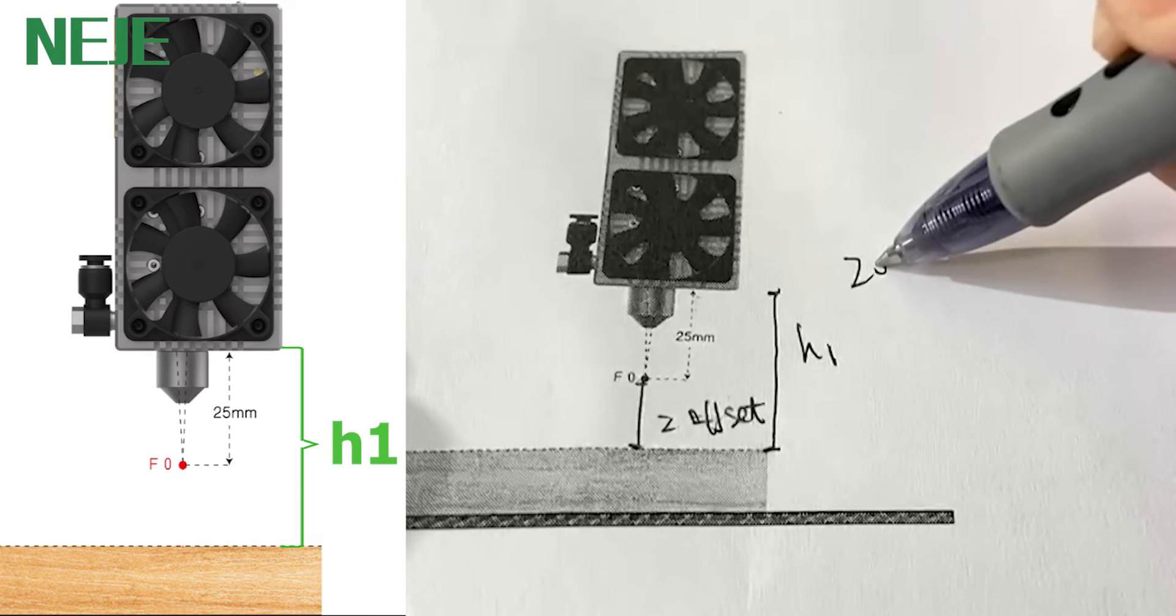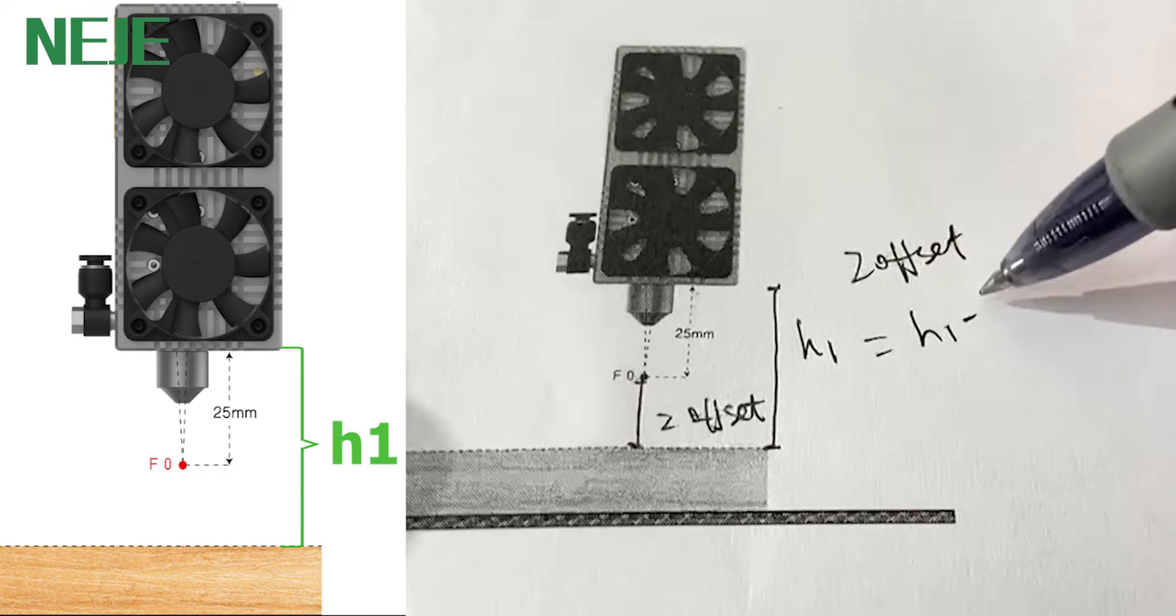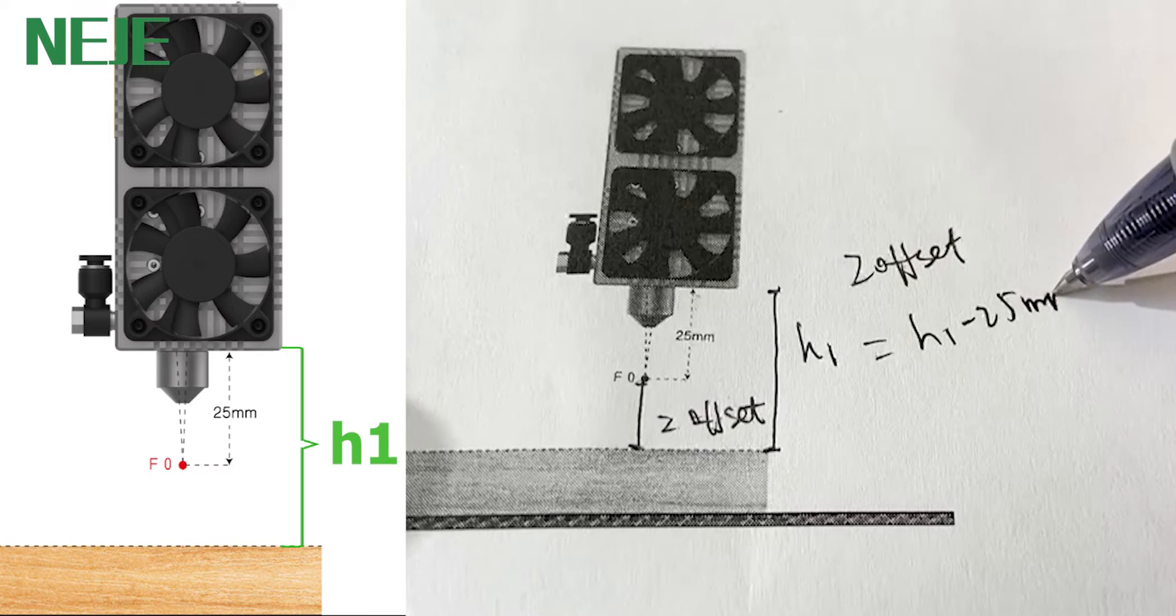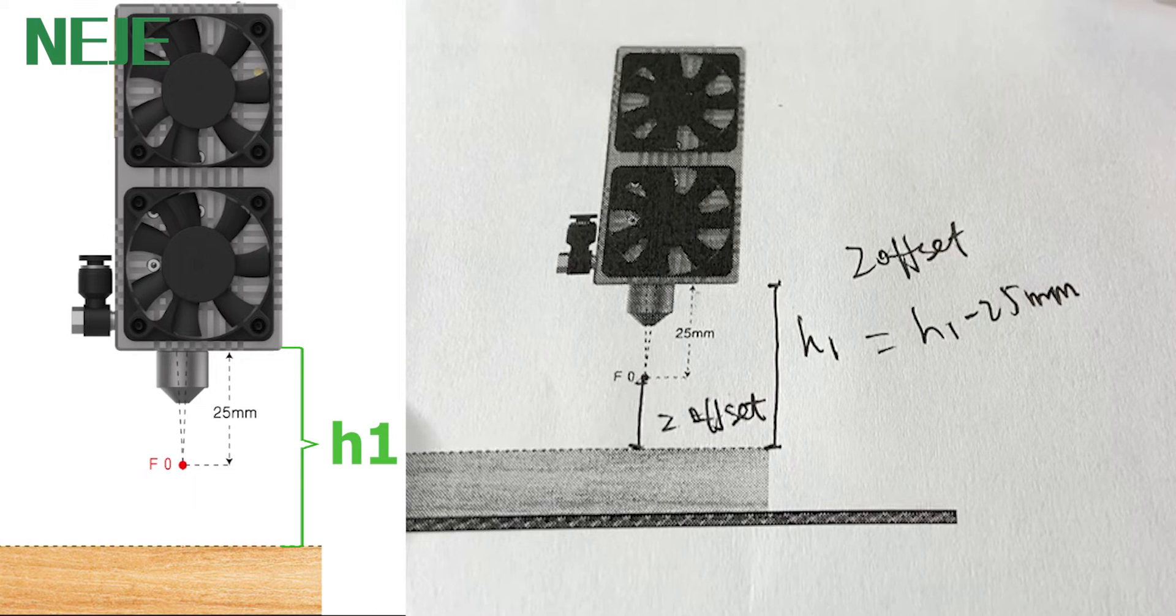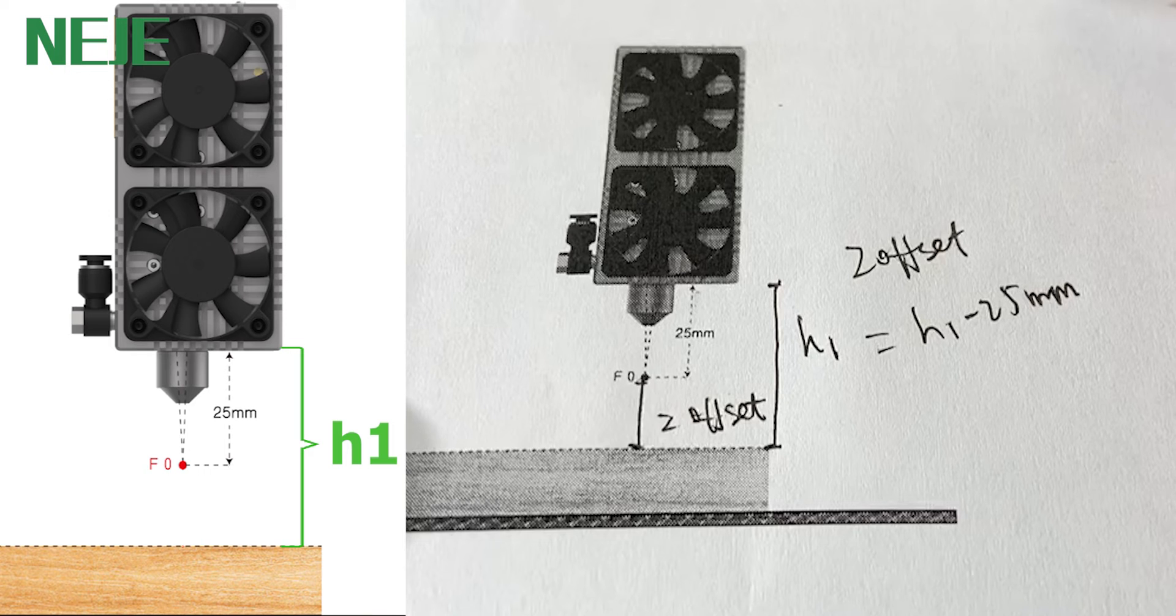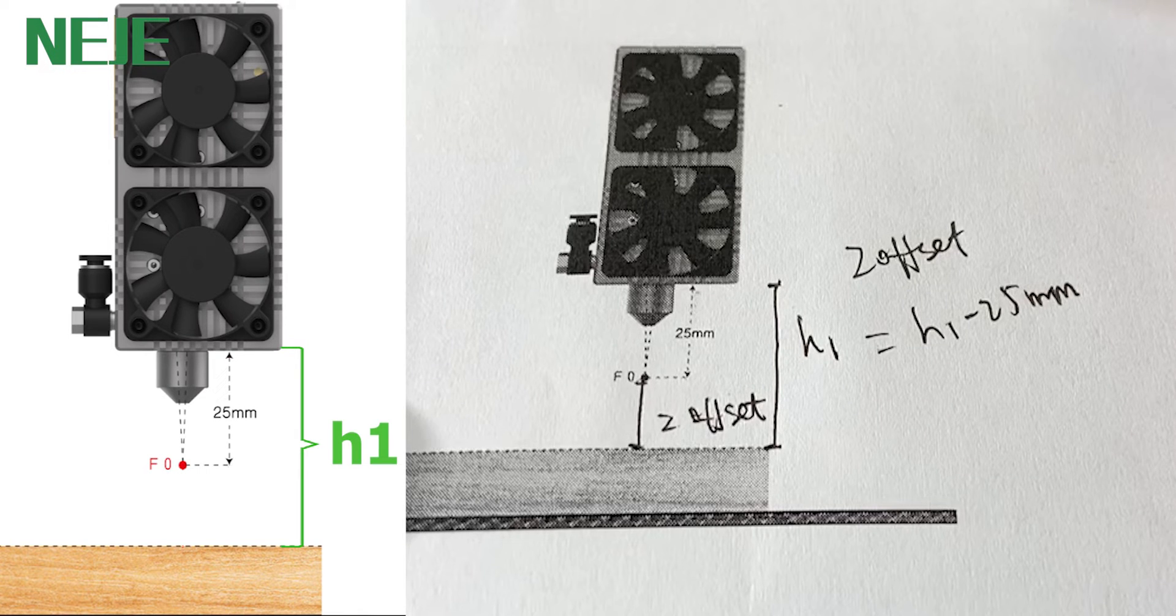So obviously, the Z-offset equals H1 minus 25 millimeters. So you just fill the Z-offset parameters in Lightburn, and then you're ready to go. But for this method, when you use different materials with different thickness, you need to measure H1 again.